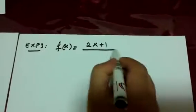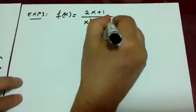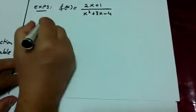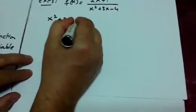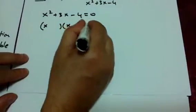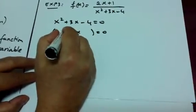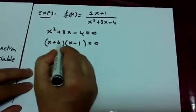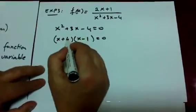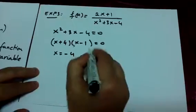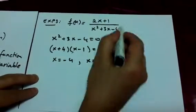Example 3: f(x) equals (2x+1) over (x² + 3x − 4). Let's find the values that make the denominator zero by factoring: x² + 3x − 4 factors as (x+4)(x−1). Check: 4x minus x gives 3x, and 4 times negative one gives negative four. So x equals negative four and x equals one make the denominator zero.